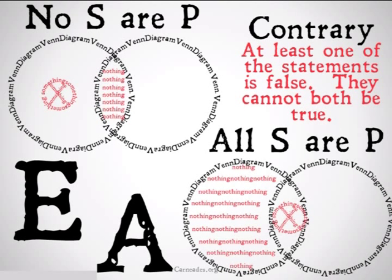We should be able to see this by filling in the Venn diagrams. It should be clear that the X in the E statement is going to fall in the nothing area for the A statement, and vice versa. So they cannot both be true.